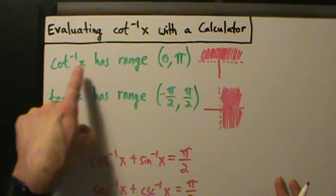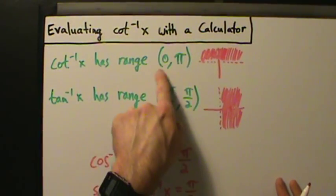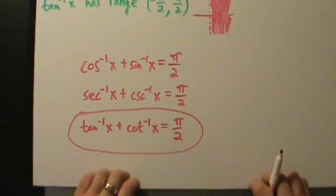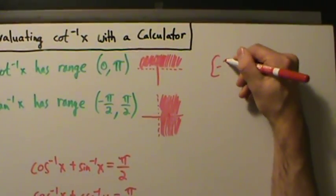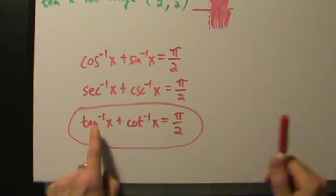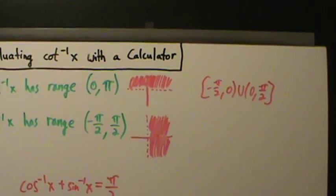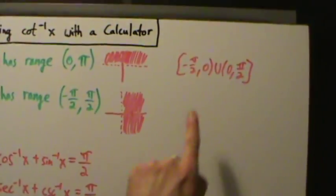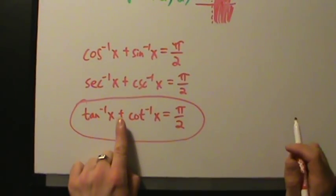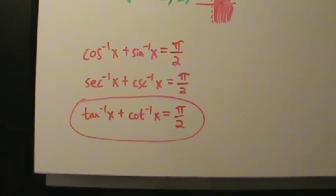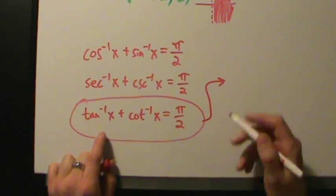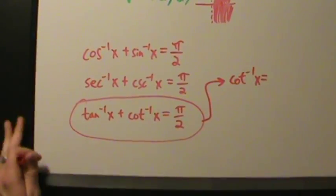Because we defined inverse cotangent to have range 0 to π, it turns out that this identity is actually true. If we had instead used the range negative π/2 to 0 union 0 to π/2, this identity would not be true. So it's a good thing we use the range 0 to π, because now we can use this to evaluate the inverse cotangent function on a calculator. If we take this equation and subtract inverse tangent from both sides, we get: inverse cotangent of x equals π/2 minus inverse tangent of x.